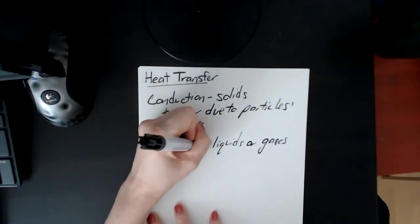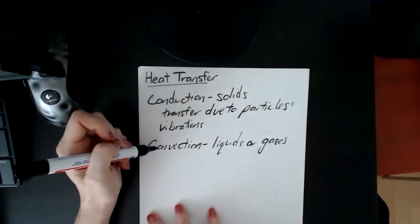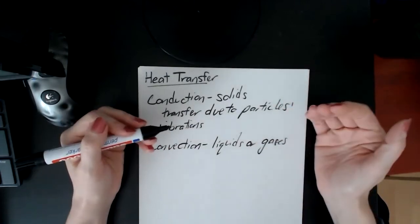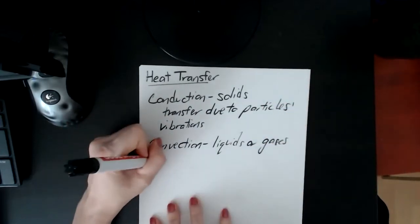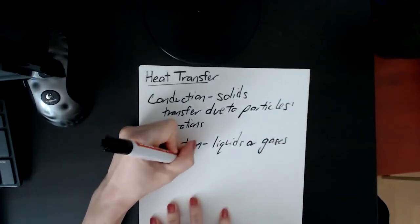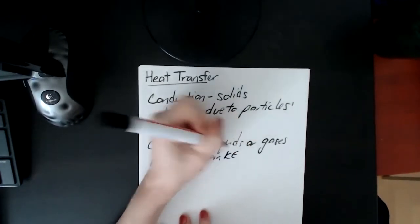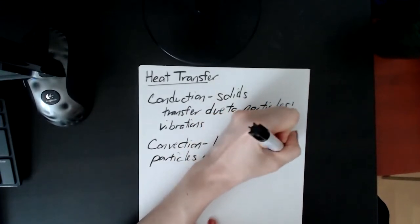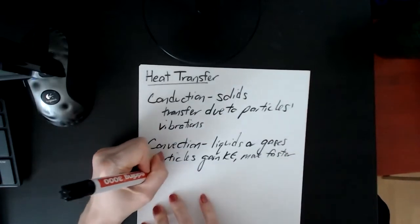The idea for convection is that when you start to heat up the particles in a liquid or a gas, they don't just vibrate, they're free to move around, and so they do. As you increase the heat, you're increasing the kinetic energy, and so the particles gain kinetic energy, which means they move faster, and because they are free to move, they move faster and they spread out.